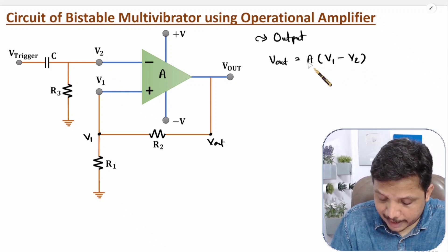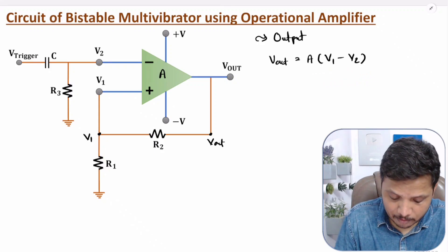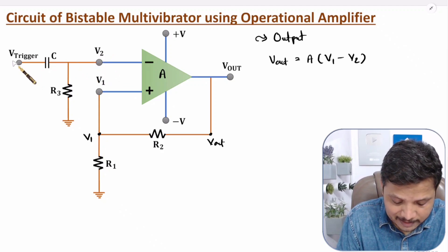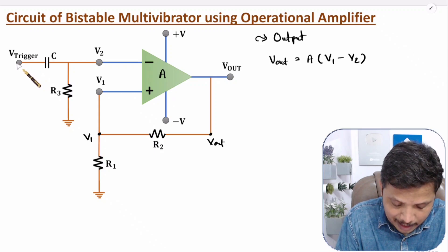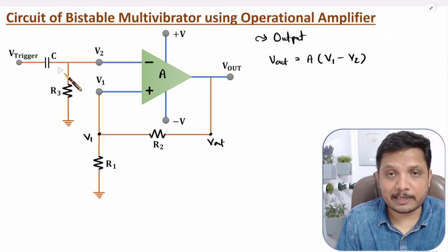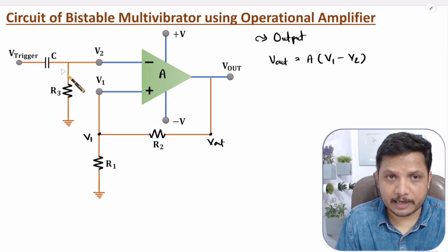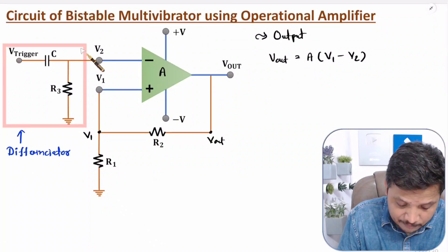If differential gain is A, then output will be this differential gain A into differential input. At the positive terminal, voltage is V1 and at the negative terminal, voltage is V2. So output is A into (V1 minus V2). Now we need to understand what is V1 and what is V2. If you observe V2, that is coming after this RC combination.